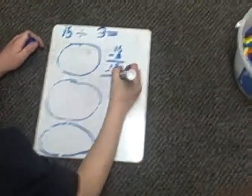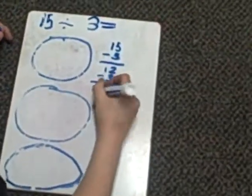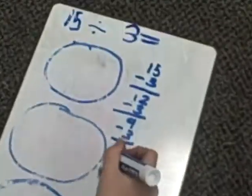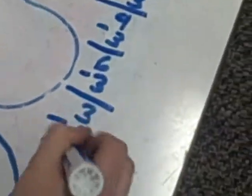take away 3 equals 9, take away 3 equals 6, take away 3 equals 3, take away 3 equals 0.